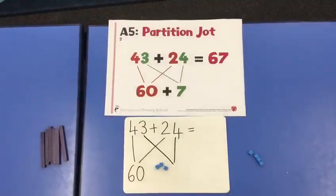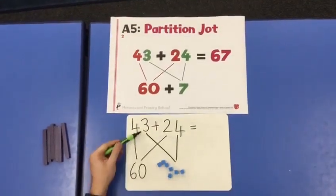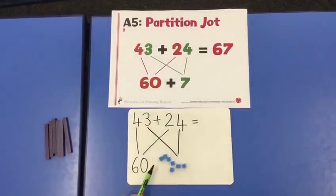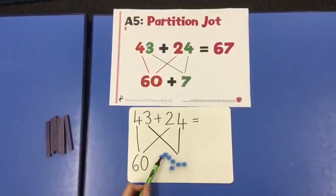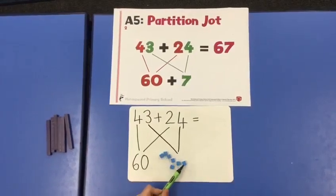3 ones add 4 ones. 3 add 4 equals 7. We'll just check. 1, 2, 3, 4, 5, 6, 7.